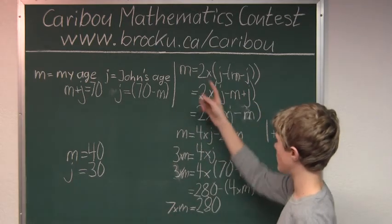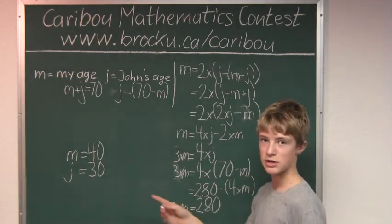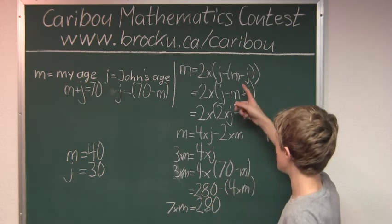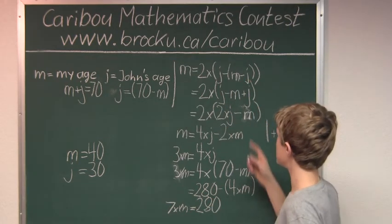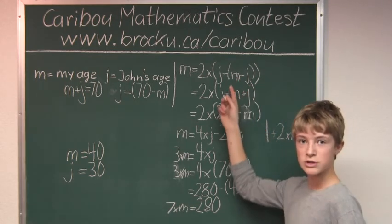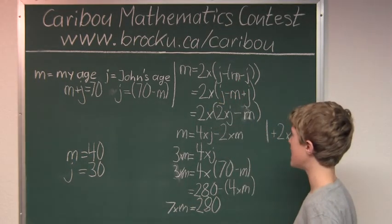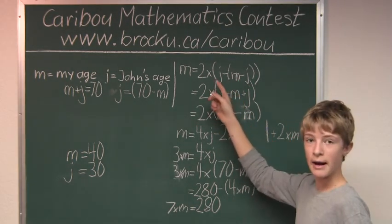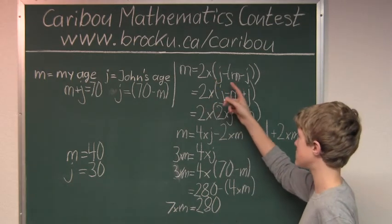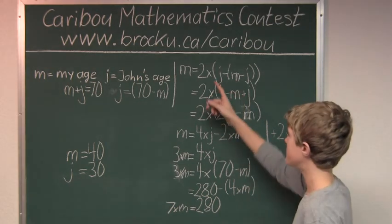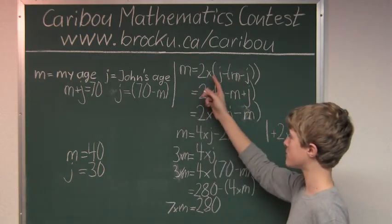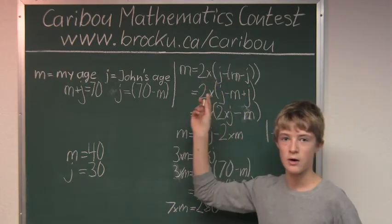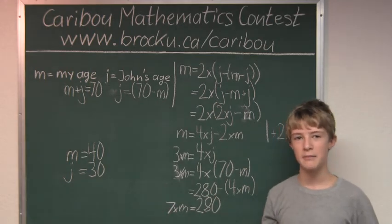Let's check with this equation, just to see if we were actually correct. We would start from the inside and work ourselves out. So, that would be m minus j, which is 40 minus 30, which is 10. And here, we have j minus 10, which is 30 minus 10, so that is 20. And we have 2 times 20, which is 40. And then, we have m equals 40. And that is exactly what we want. So, we know the answer is m equals 40.